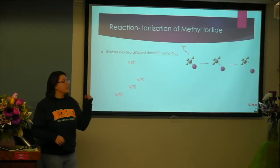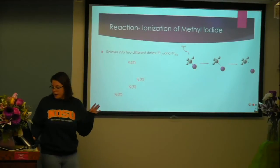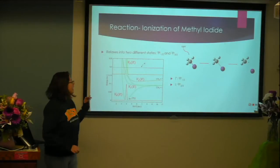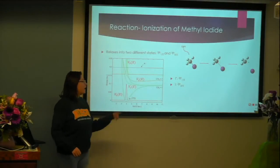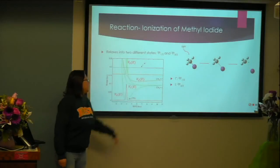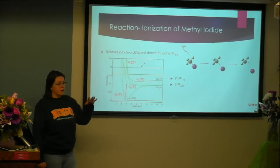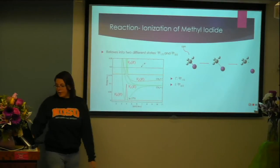After it excites, it relaxes into two different spin states: spin one-half and spin three-fourths. Spin one-half has a higher energy than spin three-fourths. In literature, they're denoted as I star for spin one-half and regular I for spin three-fourths. The higher energy is seen here, and these are the labels for the potential energy surfaces that we investigated. This is the reaction barrier for the breaking of the methyl iodide.